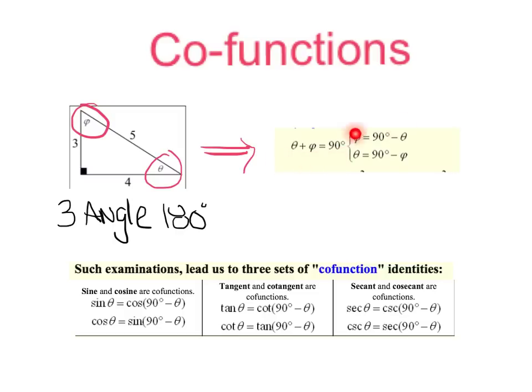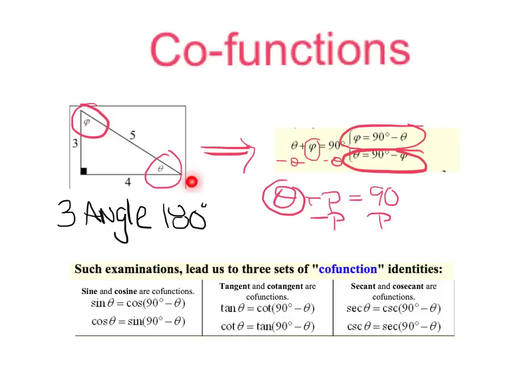I can say that in two different ways. I can take this equation and solve for this variable. I would subtract theta from both sides. So this is saying that angle could be equal to 90 minus theta. Or I could solve for theta, subtract my other angle, so theta equals 90 minus that angle. All we're saying is these two angles add up to 90.